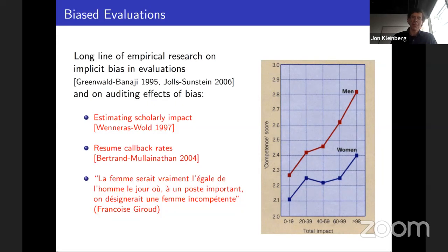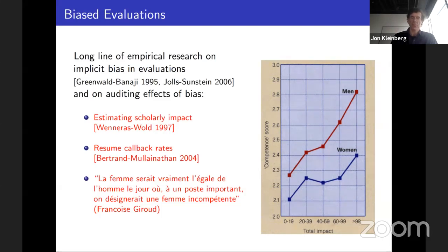I'd point out a couple of things about this experiment. First, we don't know what any one person was thinking when they looked at these resumes — we only know whether they called the applicants in for an interview, not what process led to that decision. Second, we don't actually know which specific people were engaging in bias; we simply know that in aggregate some non-trivial fraction exhibited a difference in behavior given the random split of populations.